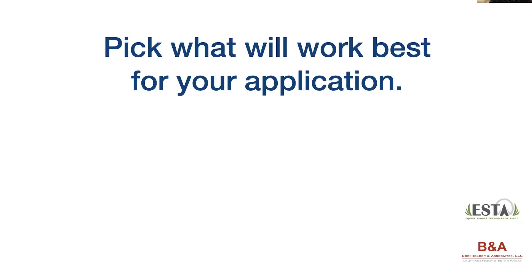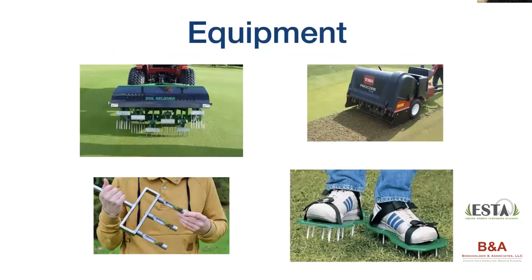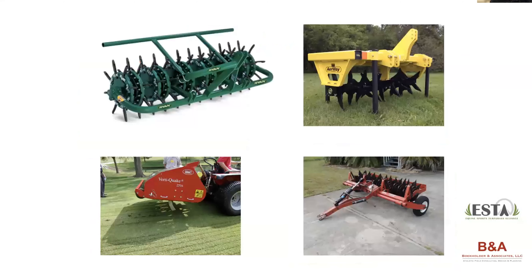Always remember: bigger is not necessarily better. Pick what works best for your application and mix up those tine depths and types each treatment to avoid creating hard pan. There is a large variety of equipment you can use — from a soil reliever to a coring type airifier. There are walk-behind greens units, larger tractor-mounted ones for spot treatments, and the good old Ryan-type roll-along core airifiers which still do a pretty good job. Airway units are great for applications on tracks, and they make a large variety of tine sizes — some almost batwing-style units for 20-30 foot passes.